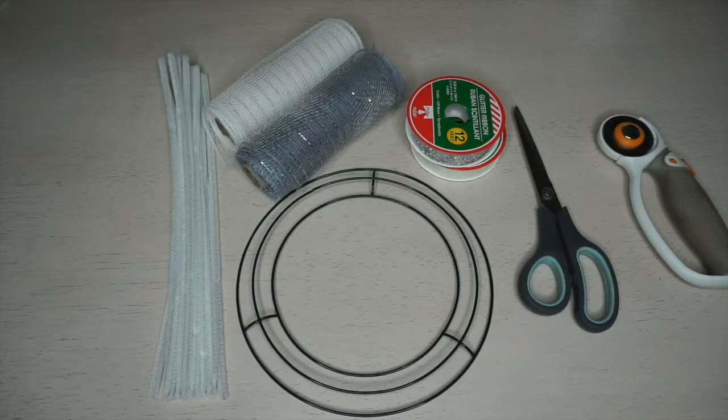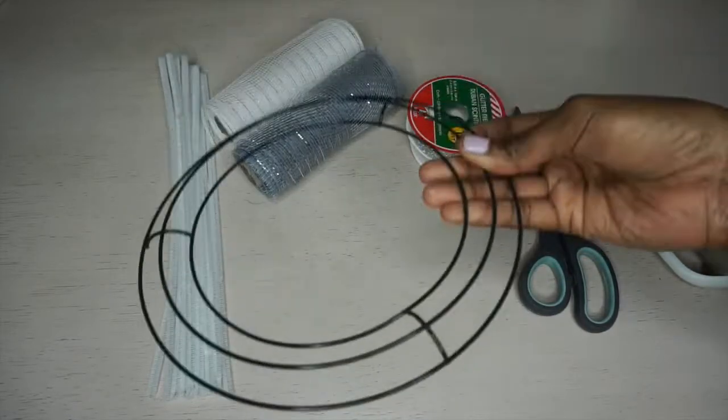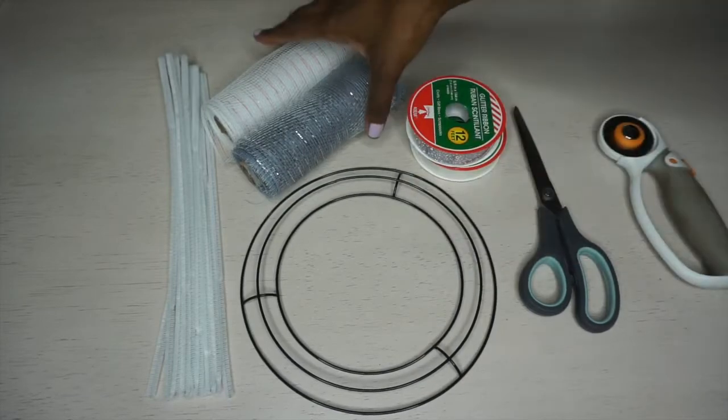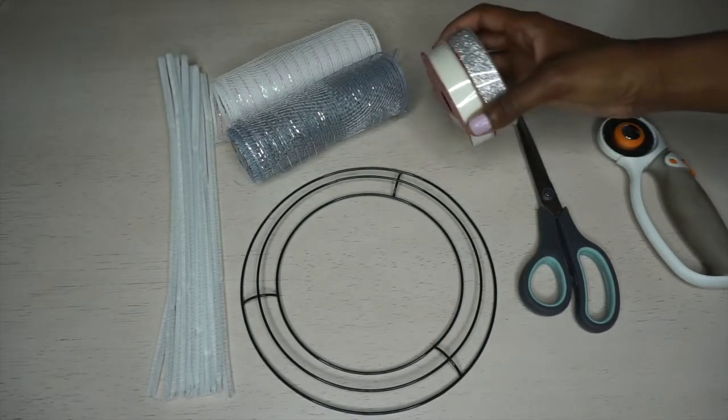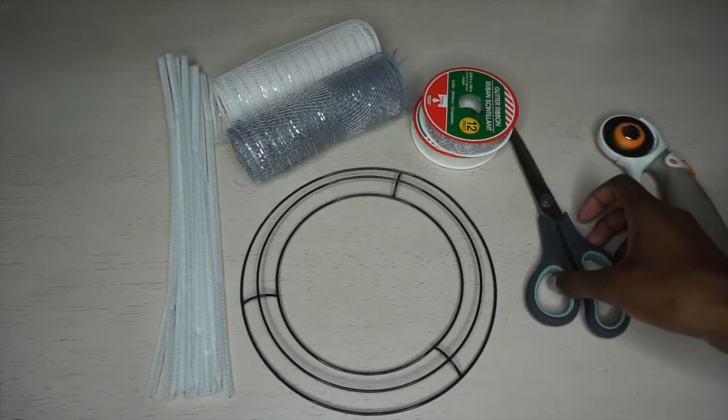What you will need: I have chanel stems, a wreath ring which is about 8 inches—it's a smaller one, two in a pack at Dollar Tree. I have silver and white deco mesh and then silver and white ribbon. The ribbon is 5 eighths inches in width. Also scissors or a rotary cutter.